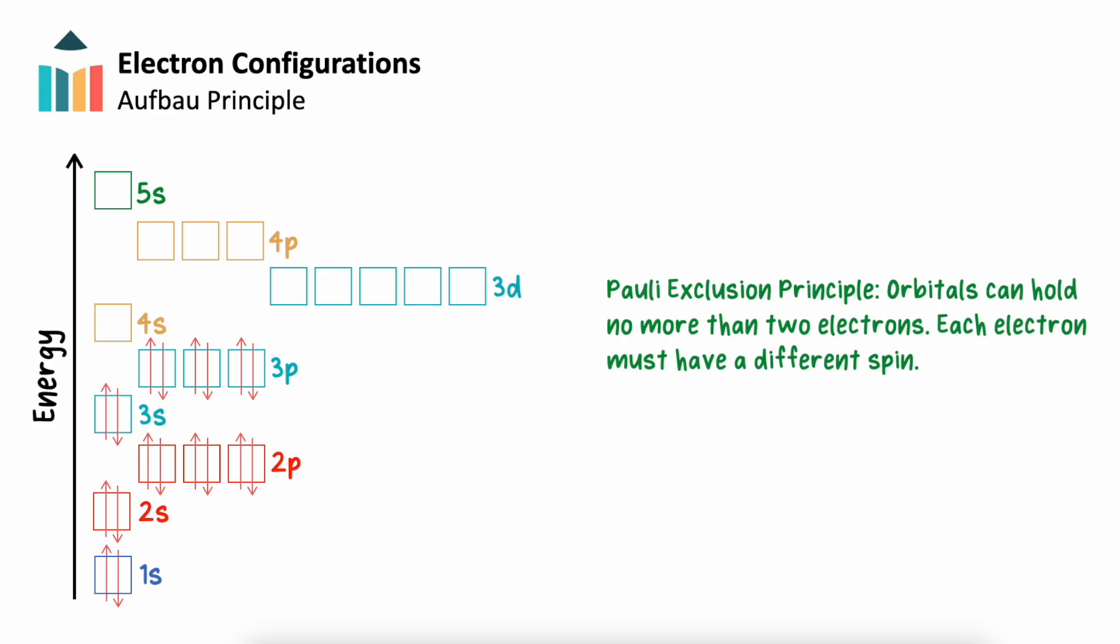We saw our next guideline a bit earlier. This was the Pauli exclusion principle, which again states that orbitals can hold no more than 2 electrons, which must have opposite spin. We see this in our electron orbital diagram, where orbitals with 2 electrons are shown as boxes with an up and down arrow, take this orbital in 3P for example.